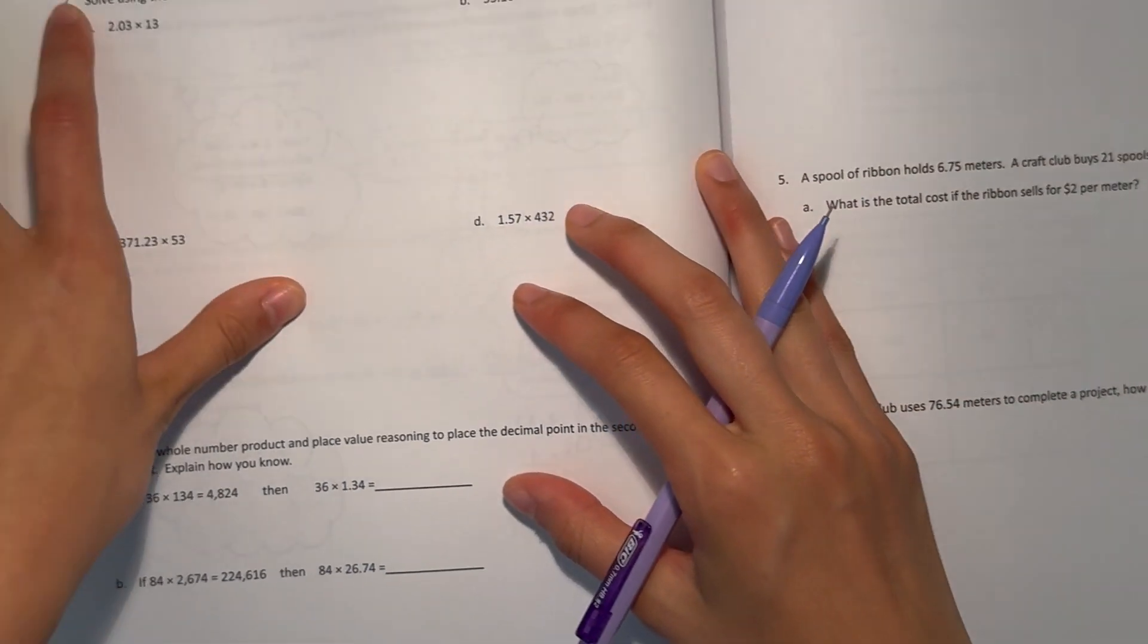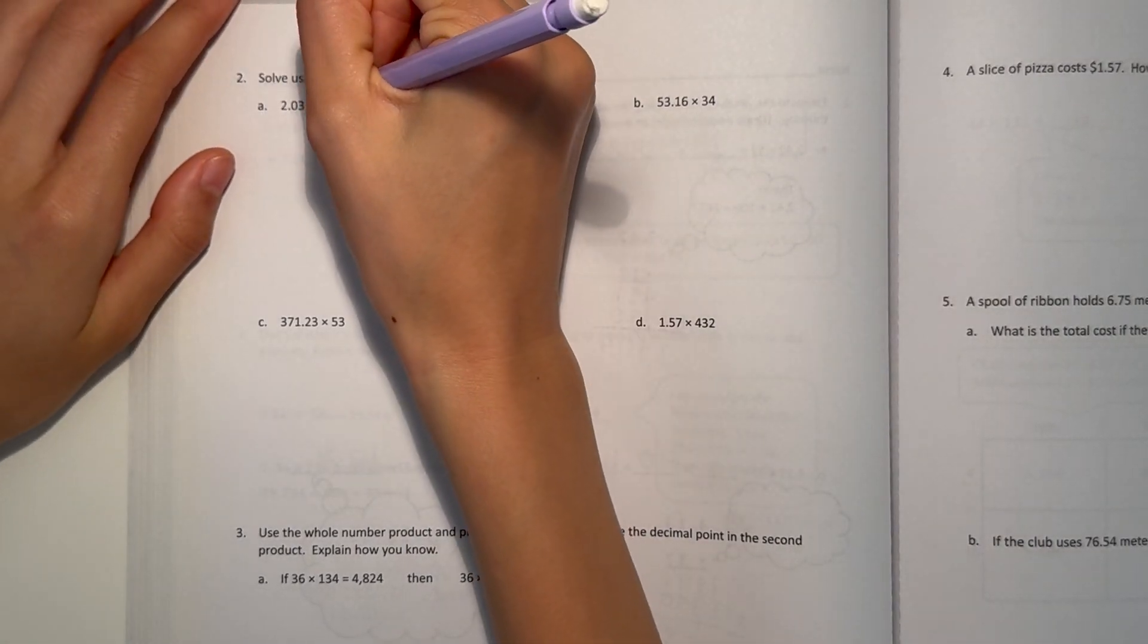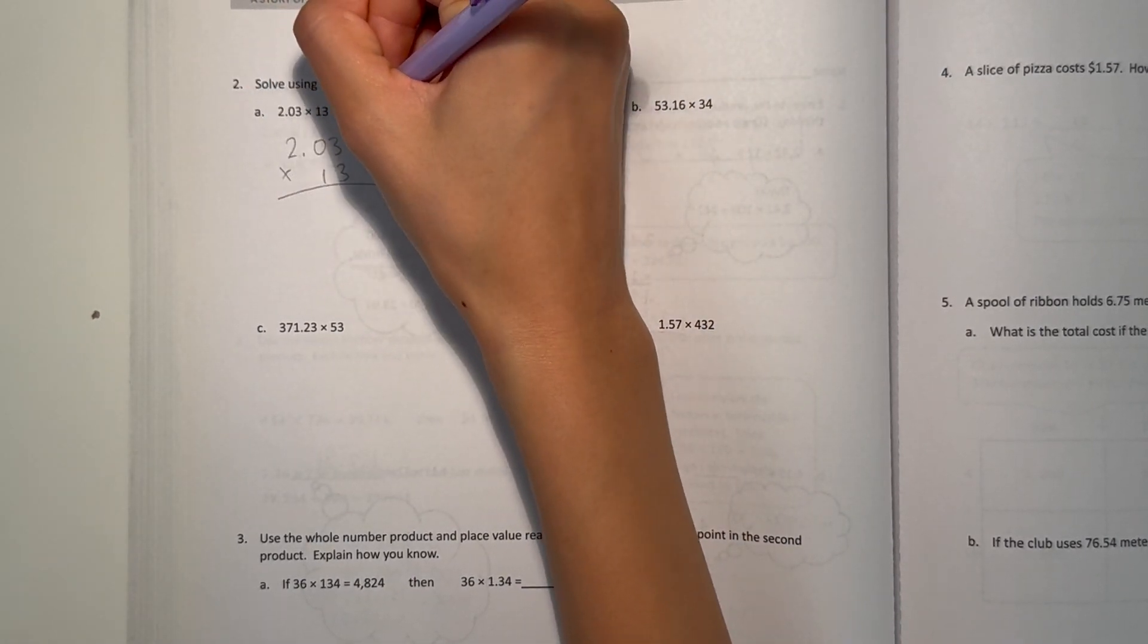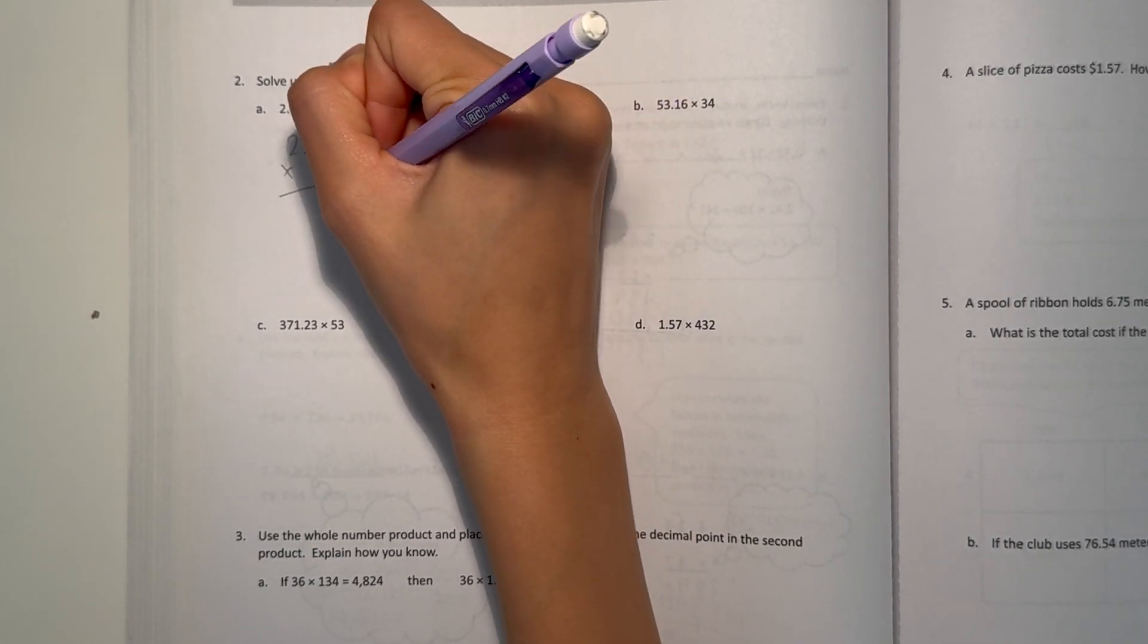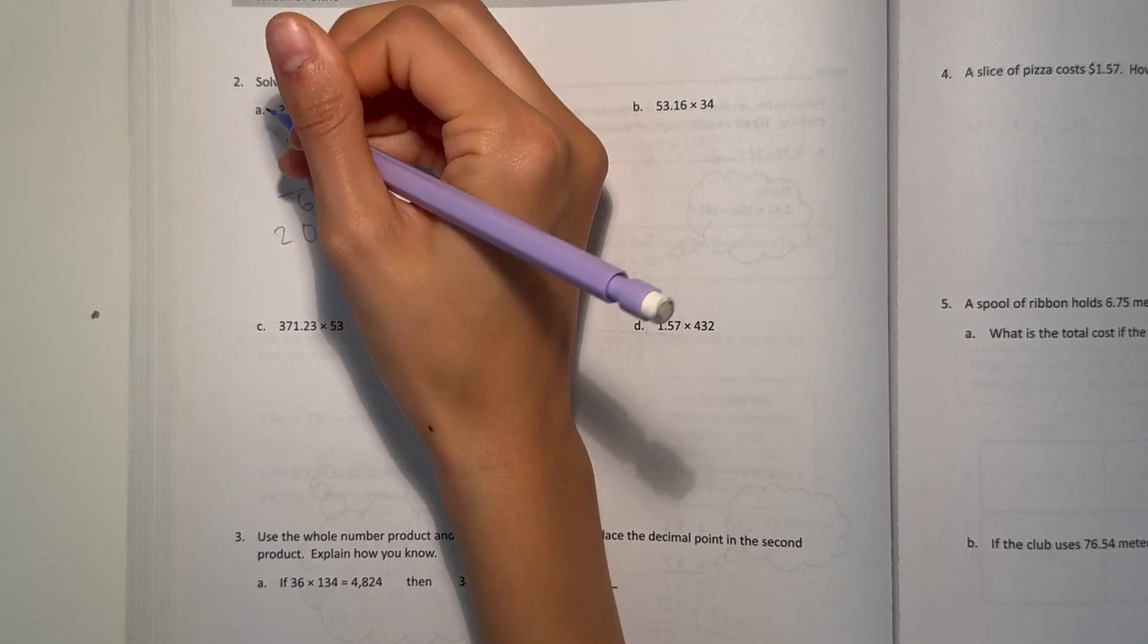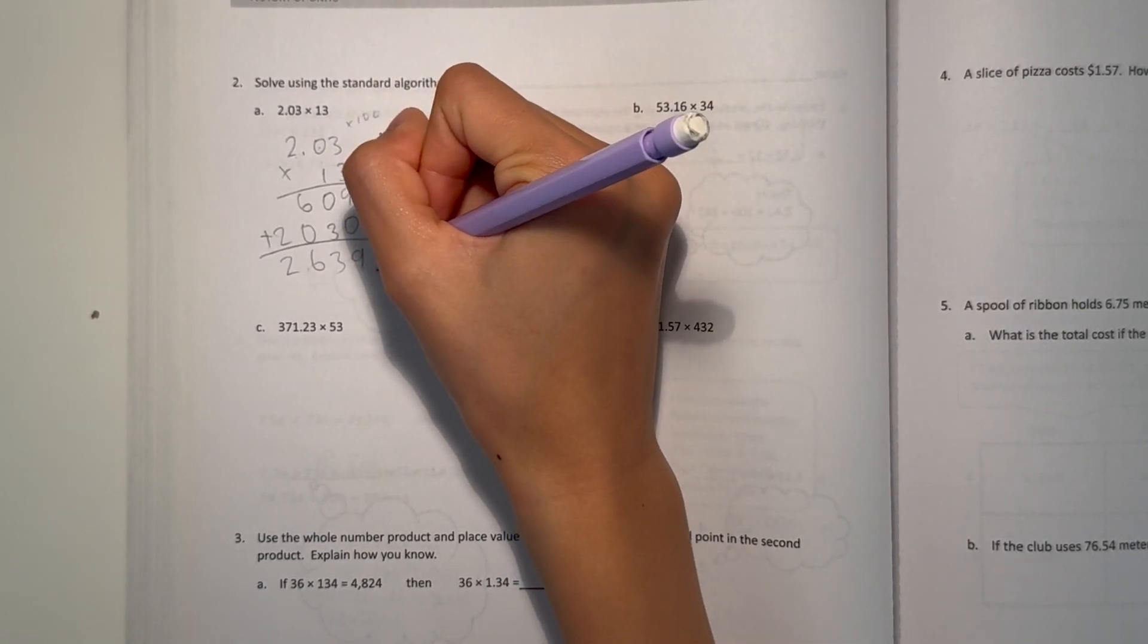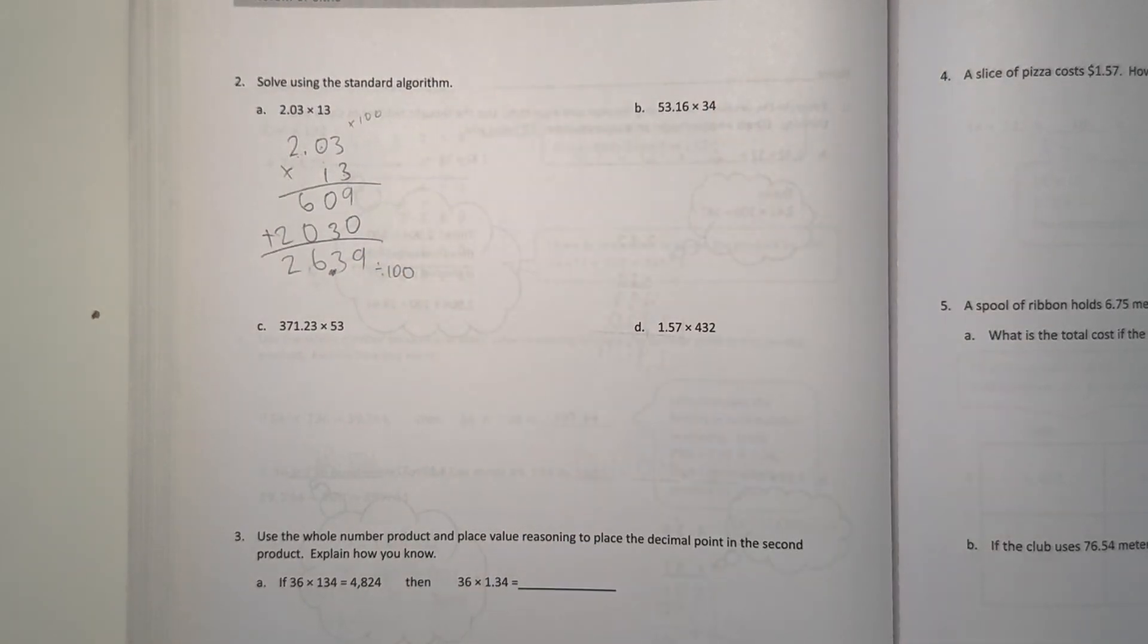Now for our next page, for two. Solve using the standard algorithm. 2.03 times 13. We write it as it is but pretend that 2.03 is actually 203. To do that, we multiply by 100. 3 times 3 is 9, 0 times 3 is 0, and 2 times 3 is 6. Add 0. 1 times 3 is 3, 1 times 0 is 0, and 1 times 2 is 2. Now we add: 2,639. Since we multiplied by 100 to get 203, now we divide by 100, which we move the decimal point two places to the left. So our answer is 26.39.